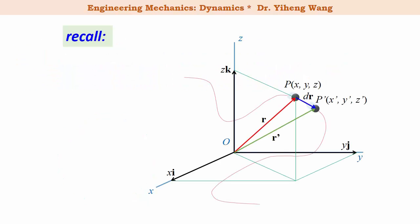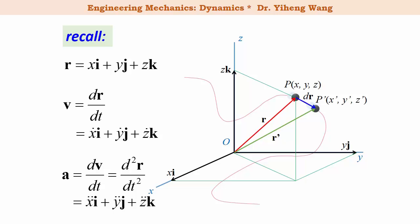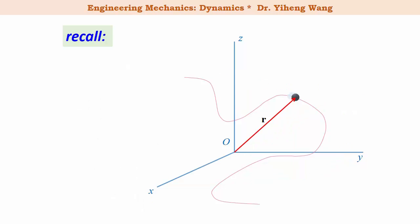If you recall, when the curvilinear motion of a particle is studied in an x, y, z rectangular coordinate system, its position is represented by position vector r, its instantaneous velocity v is dr/dt, and its instantaneous acceleration a is the second time derivative of position r. In general, r, v, and a are all three-dimensional Cartesian vectors. An important conclusion: the velocity of the particle at any point is always tangent to the path.